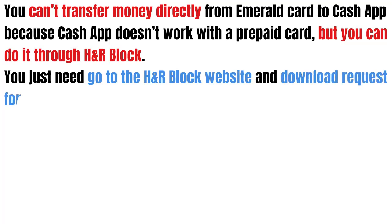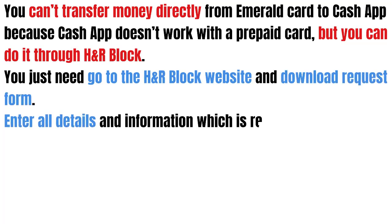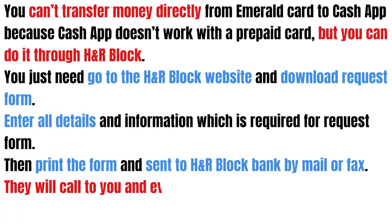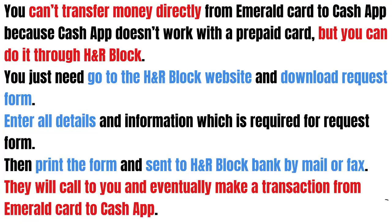You just need to go to the H&R Block website and download the request form. Enter all the details and information required for the request form. Then print the form and send it to the H&R Block bank by mail or fax. They will call you and eventually make a transaction from MRO card to Cash App.